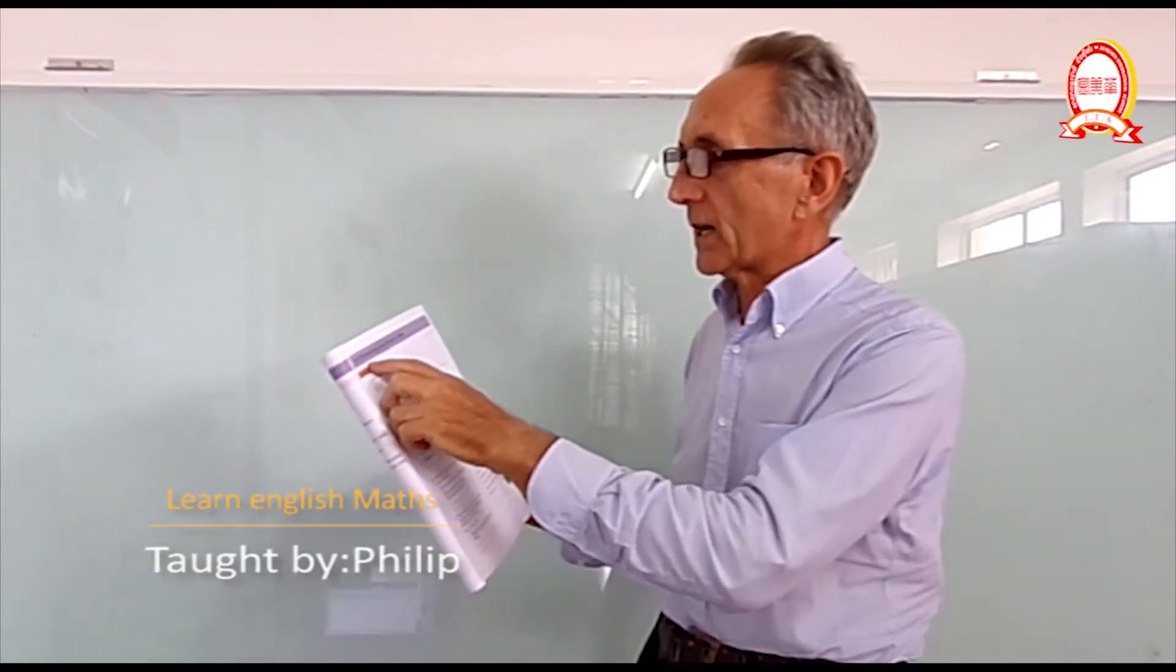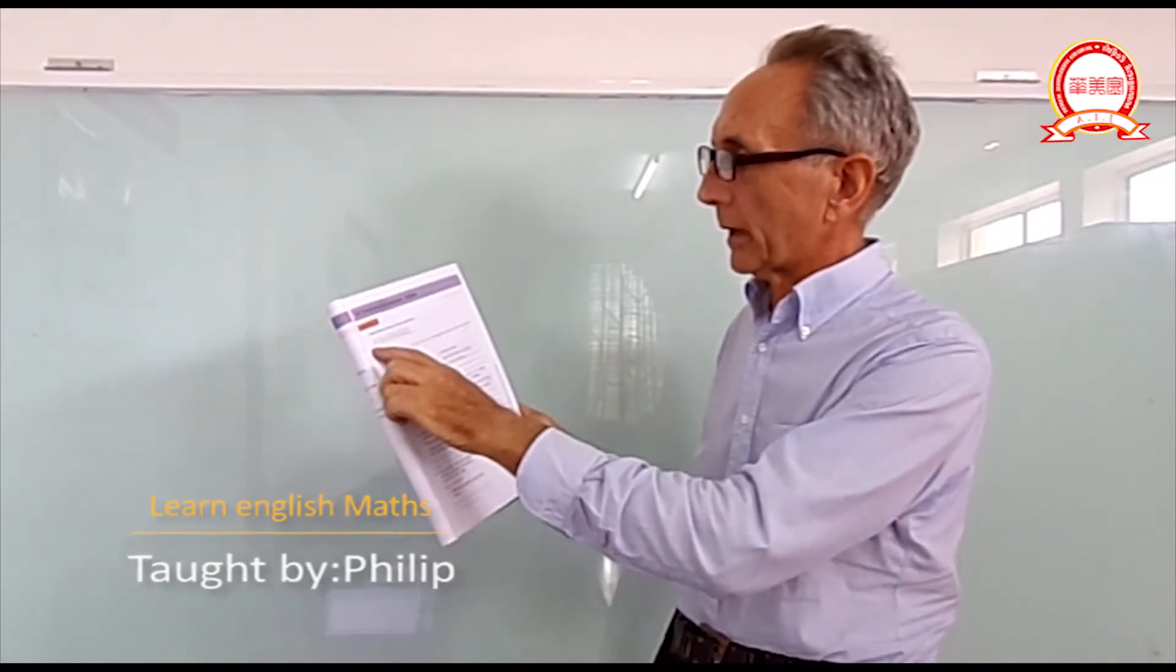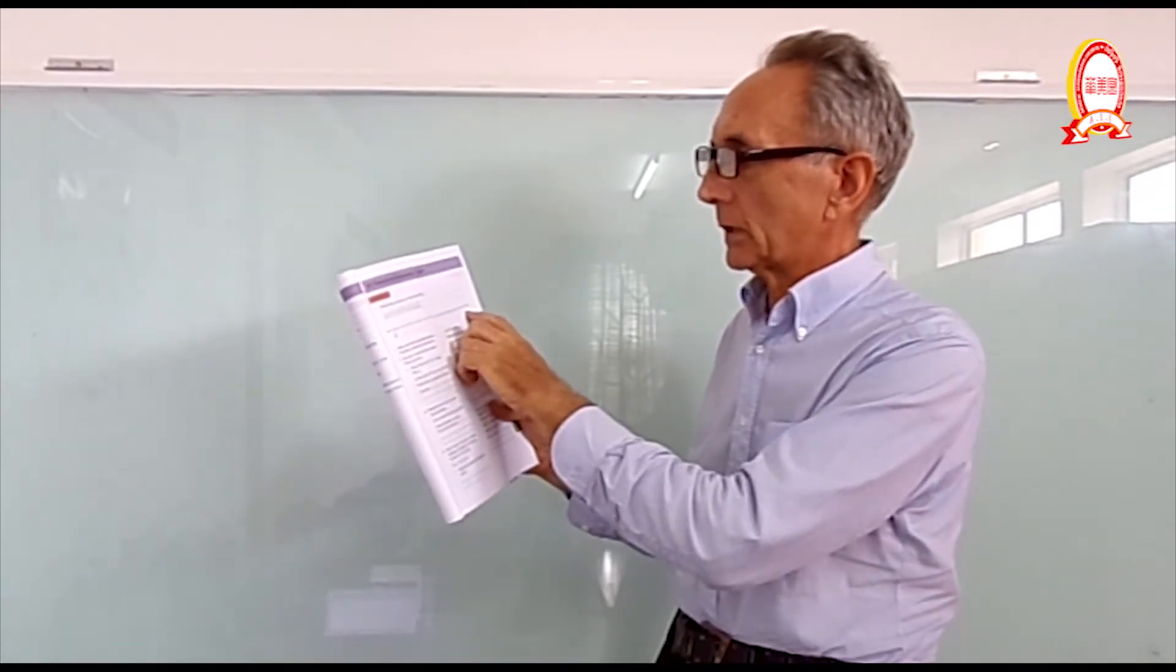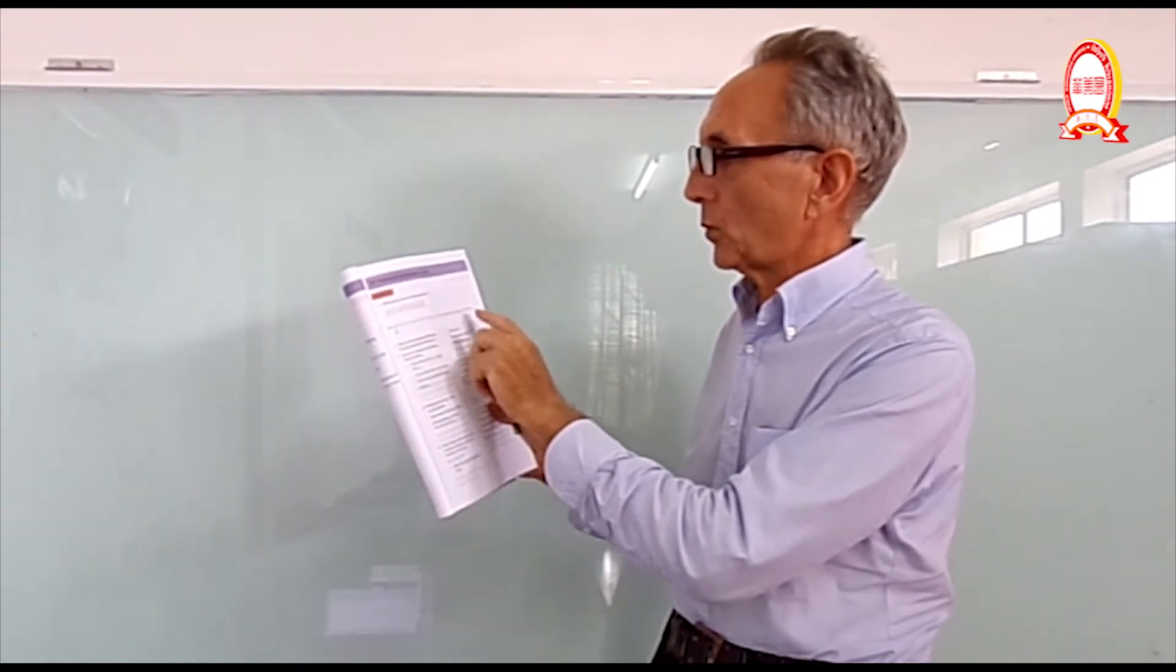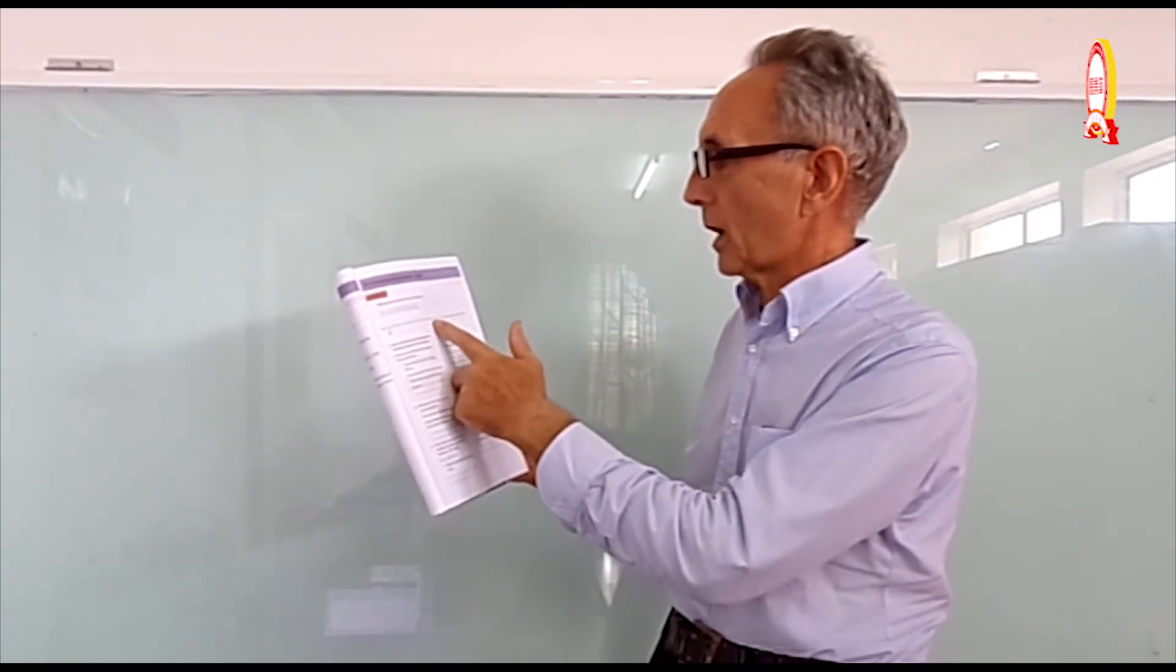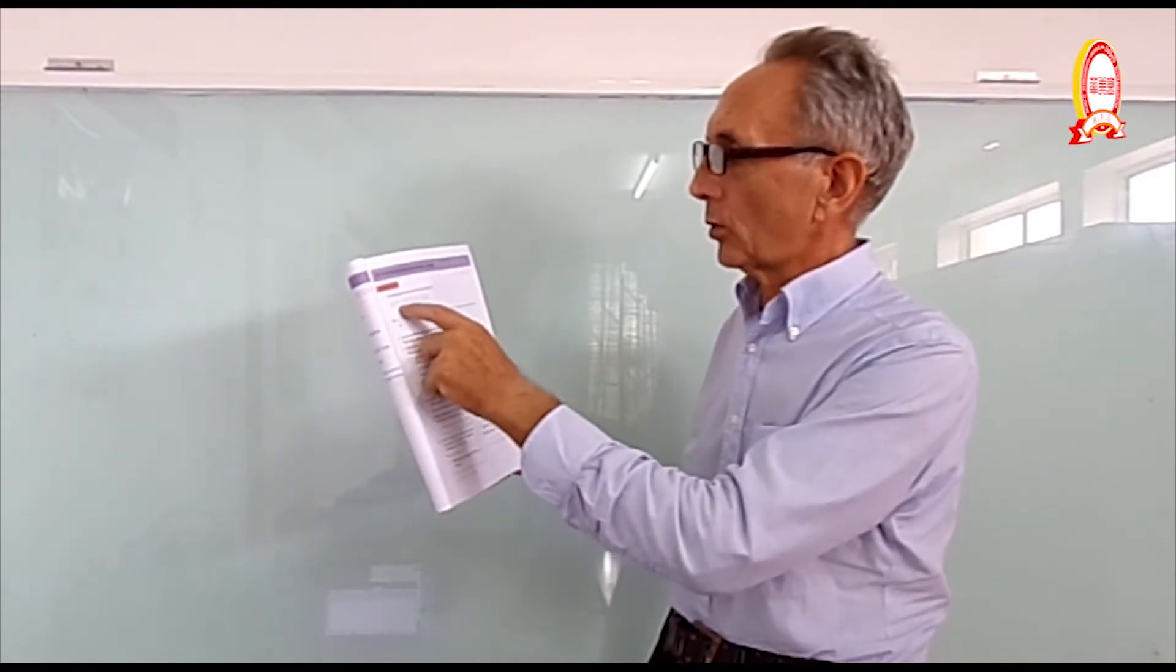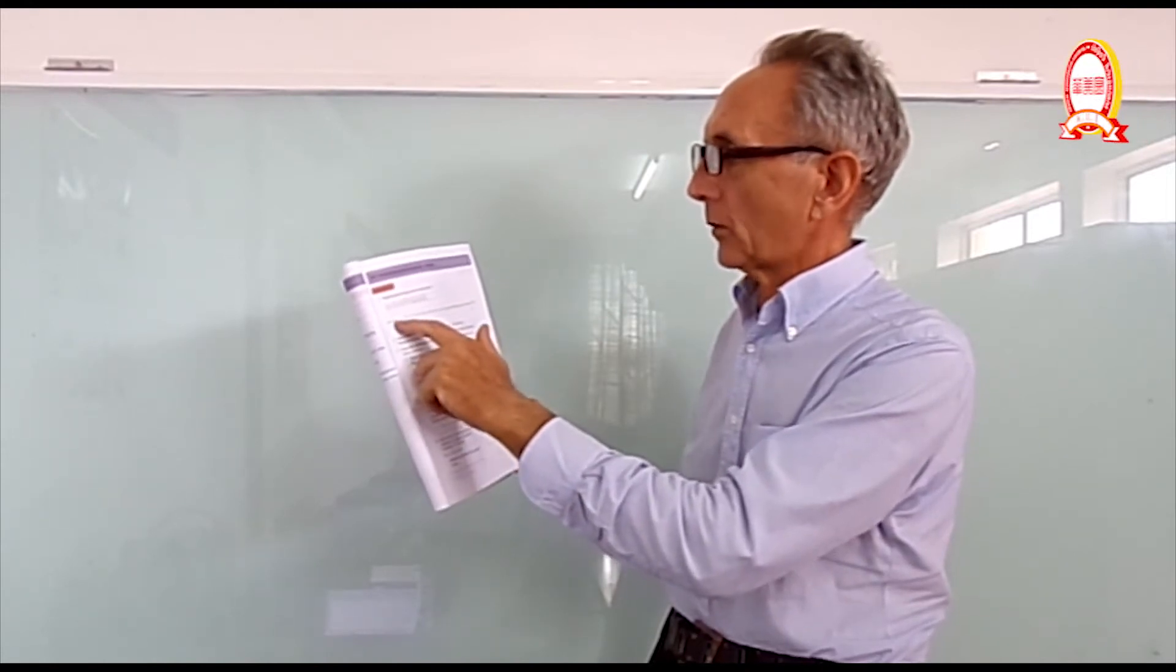Looking at fractions and decimals, tenths. Write these numbers on the number line. So we've got 0 and 1. So these are all numbers that go between 0 and 1. So half would go halfway between 0 and 1. Then you need to look at all these other things, and you put them in the correct place on the number line.